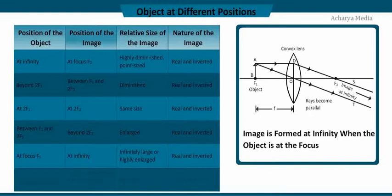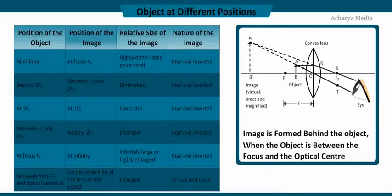When the object is between the optic center and the focus, the refracted rays diverge from each other. Therefore, when extending the rays backwards, they meet on the same side of the object, forming a virtual image. The image formed is erect and magnified.